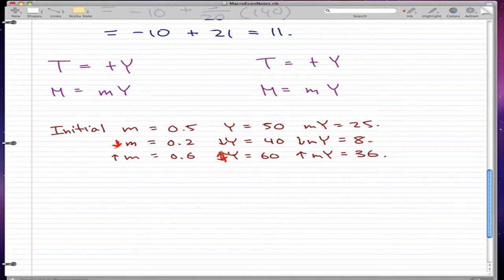From 50 to 60, then m times y similarly rises from 25 to 36. Now these numbers could easily be substituted for t and y. Imagine this can be ty and this would be ty - it's the same idea.